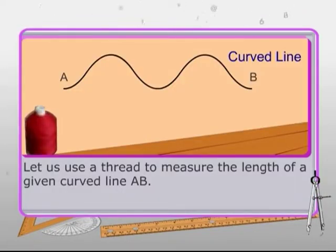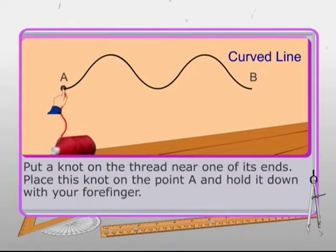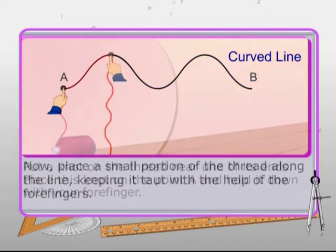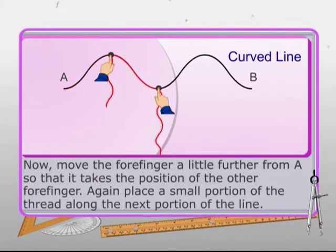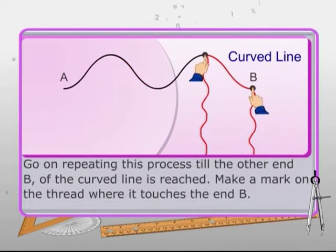Let's measure the length of a given curved line AB using a thread. Put a knot on the thread near one of its ends. Place this knot on the point A and hold it down with the forefinger. Now, place a small portion of the thread along the line. Keep it taut with the help of the forefingers. Now, move the forefinger a little further from A so that it takes the position of the other forefinger. Again, place a small portion of the thread along the next portion of the line. Go on repeating this process till the other end B of the curved line is reached.